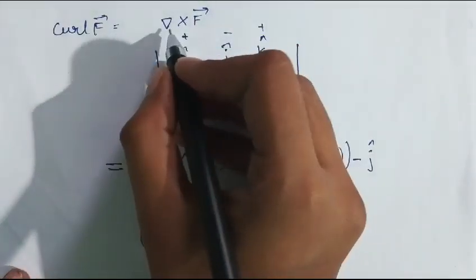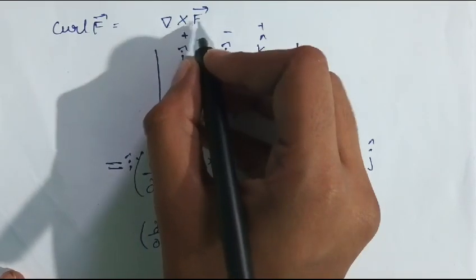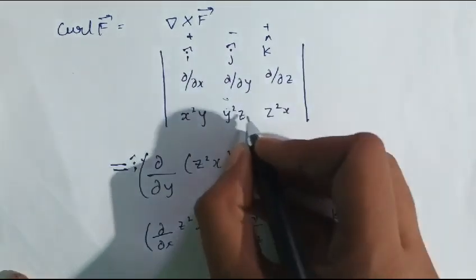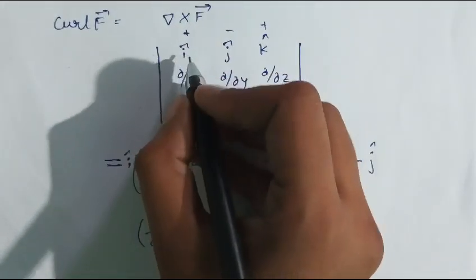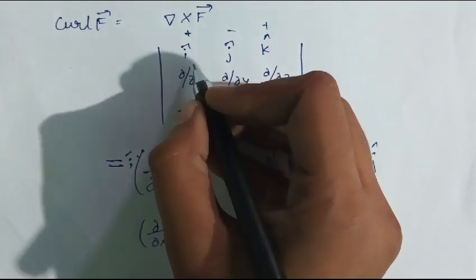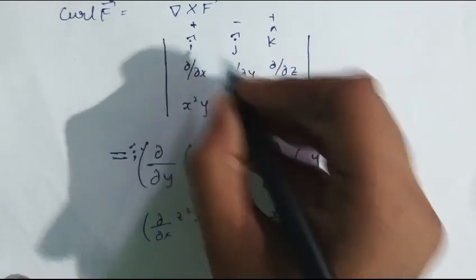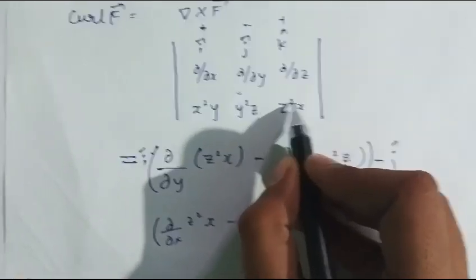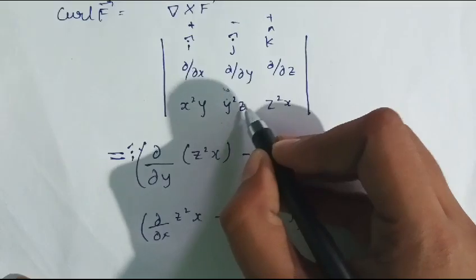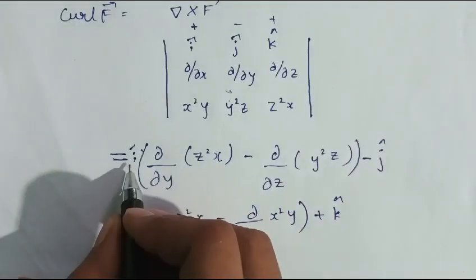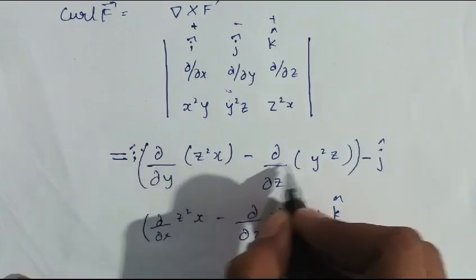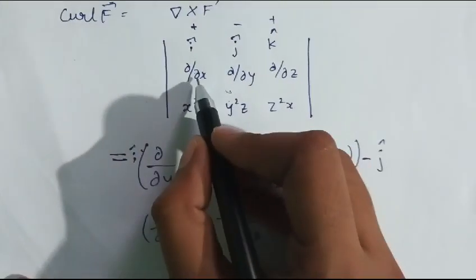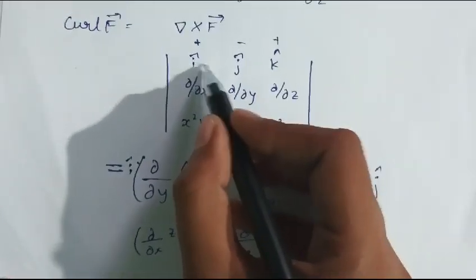To find curl of f we take the cross product del cross f. We solve this using the determinant method, placing the values into the determinant. When considering the î-cap component, we neglect the rows and columns containing î-cap, then multiply ∂/∂y with respect to z²x and ∂/∂z with respect to y²z, subtracting both: (∂/∂y)(z²x) - (∂/∂z)(y²z) for î.